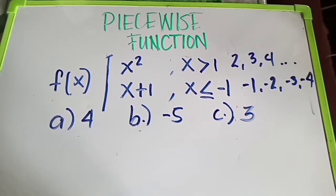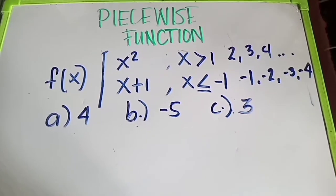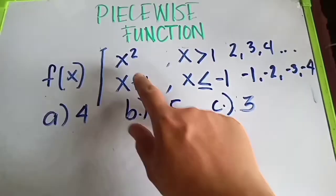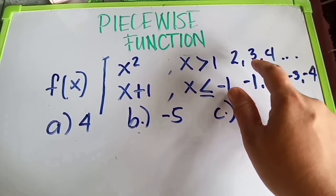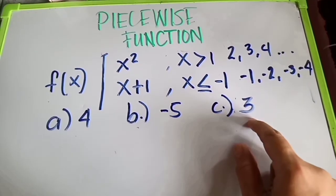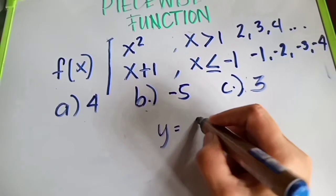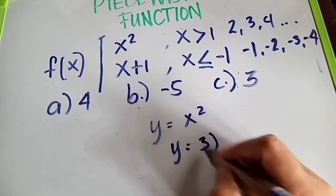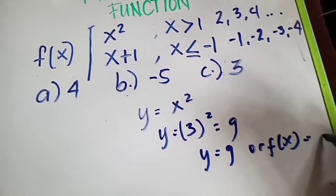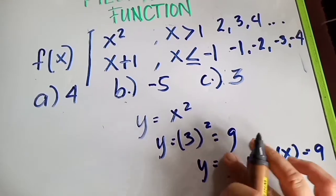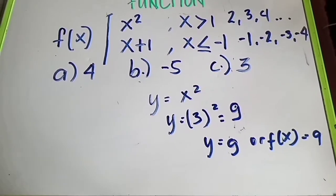Let's go for letter C, which has the value of positive 3. To identify which piece applies: positive 3 belongs to x squared because x greater than 1 includes the numbers 2, 3, 4 — so 3 qualifies. So we solve: y equals x squared, y equals 3 squared, which equals 9. So y equals 9, or f of x equals 9. This is what you call the piecewise function.